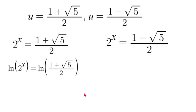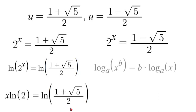Now applying some logarithm properties. If we had log x to the power of b that would be equal to b times log of x. We're moving our exponent to the front of our logarithm. So in this case we would move x to the front. x times natural log of 2 is equal to natural log of the right side stays the same.